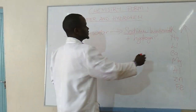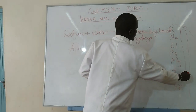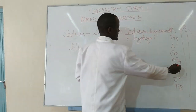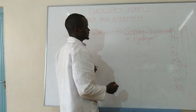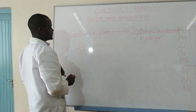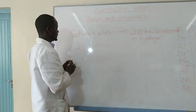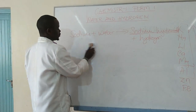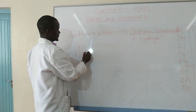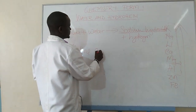We call these metals — the ones that react directly with water, even though magnesium reacts a bit slowly — alkaline earth metals.